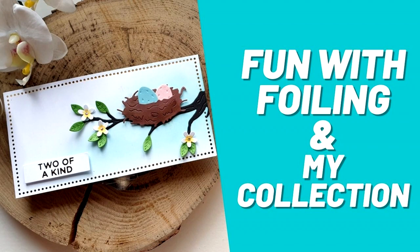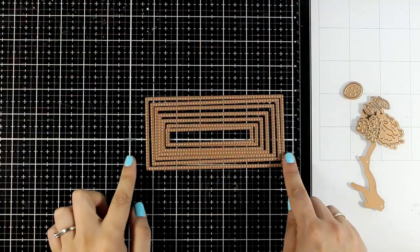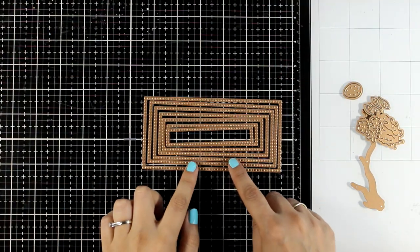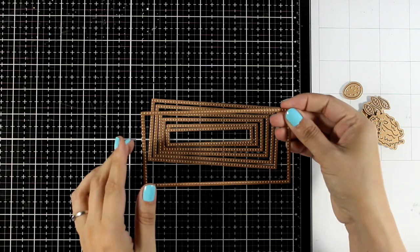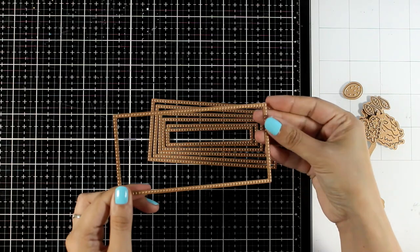Hello my crafty friends and welcome back to another card making video. Today I'm going to play with a July Glimmer Hot Foil Kit. This month it is really versatile and perfect for those who love mini slimline cards.